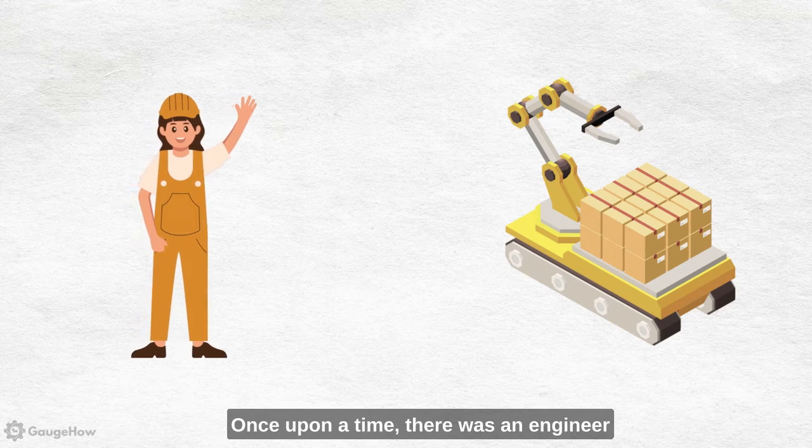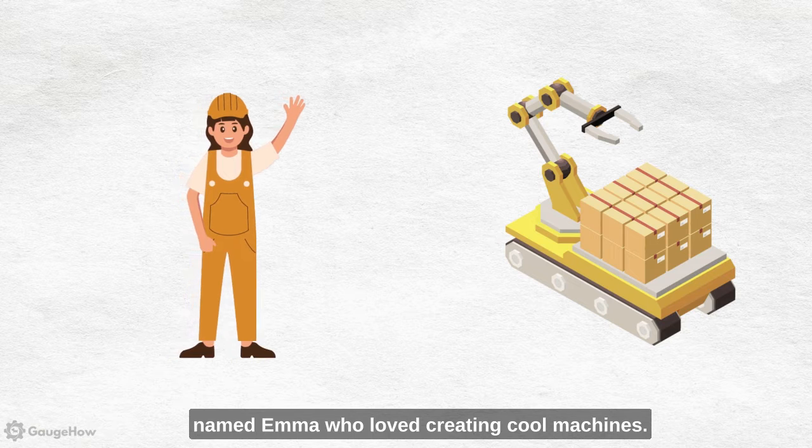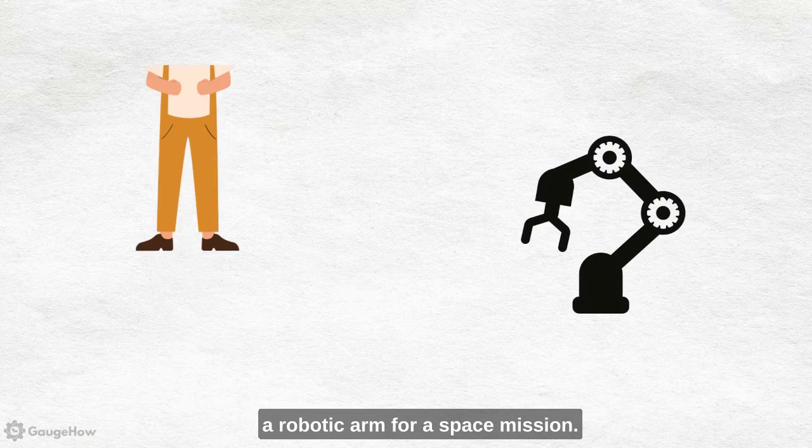Once upon a time, there was an engineer named Emma who loved creating cool machines. She was given a special project designing a robotic arm for a space mission.